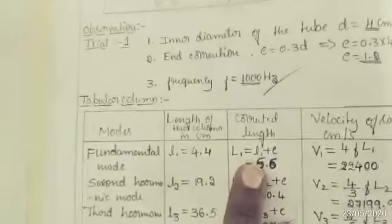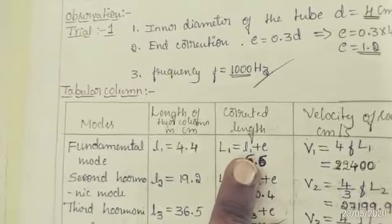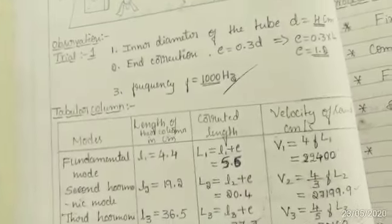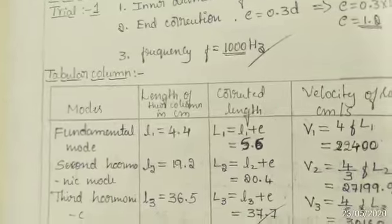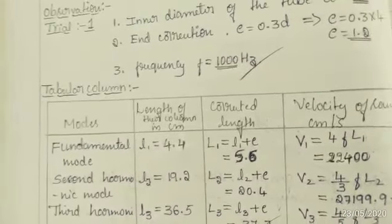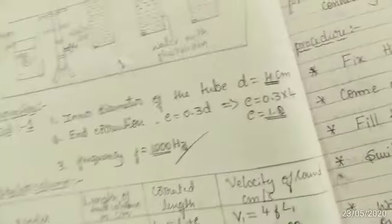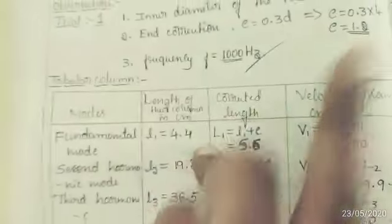Corrected length, capital L1 is equal to L1 plus E, that is, 4.4 plus 1.2. It is 5.6.